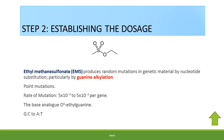Germination efficiency is generally carried out without the use of the mutagen in order to determine the actual number of seeds which will germinate in the control. The second aspect is to establish the dosage of the mutagen. Ethylmethanesulfonate produces random mutations in genetic material by nucleotide substitution, particularly guanine alkylation, resulting in point mutations at a rate of 5×10⁻⁴ to 5×10⁻² per gene.